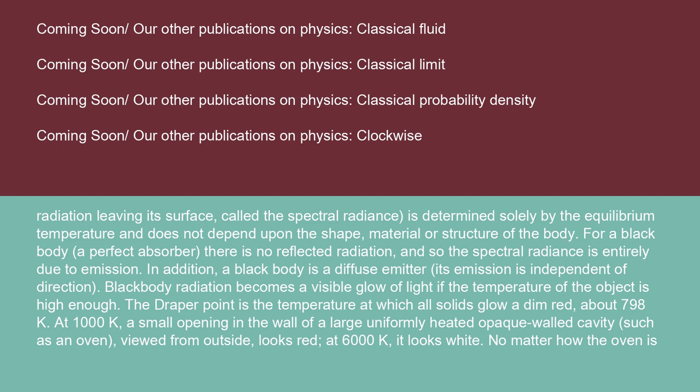In addition, a black body is a diffuse emitter; its emission is independent of direction. Black body radiation becomes a visible glow of light if the temperature of the object is high enough. The Draper Point is the temperature at which all solids glow a dim red, about 798 K.